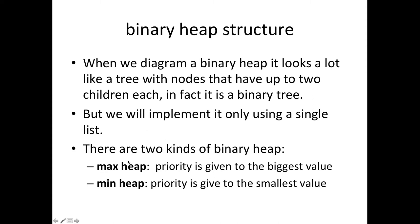There are two kinds of binary heaps for implementing priority queues. There's a max heap, where priority is given to the biggest value — like the nightclub, where the highest priority is the biggest number. And there's a min heap, where priority is given to the smallest value.